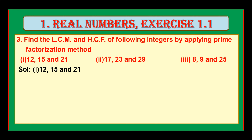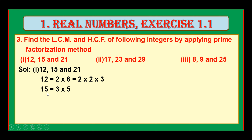In order to find the LCM and HCF, first of all let us divide these given numbers into prime factors. Consider the first number, 12. You can write 12 as 2 into 6. Again, 6 can be divided into 2 into 3. Therefore, 12 is equal to 2 into 2 into 3. Next number is 15. You can write 15 as 3 into 5 — both prime numbers. Similarly, 21 can be written as 3 into 7 — both prime numbers. We have divided 12, 15 and 21 into prime factors.